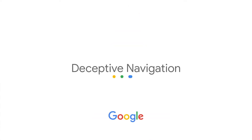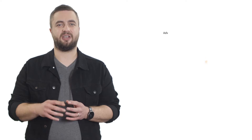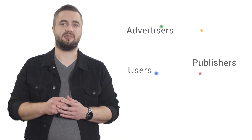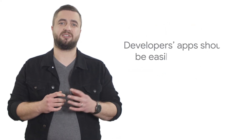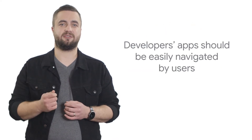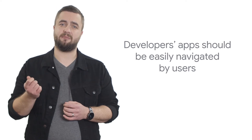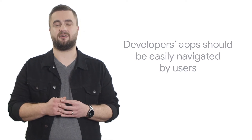Today I'd like to talk about deceptive site navigation. When we create Google publisher policies we try to consider the needs of users, advertisers and publishers. Keeping this in mind, we believe that publisher sites should be easily navigated by users who are looking to find what products, information or services they expect to find on your website.